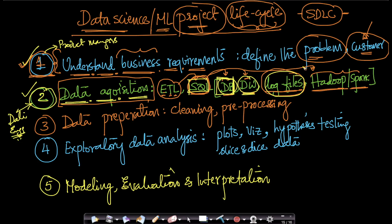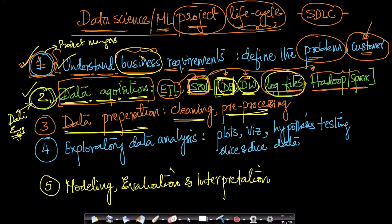The third step is data preparation. Now that you know the business problem and have acquired all the data, you clean and pre-process it and perform featurization. This is where the actual data scientist's work begins. In our course case studies we spend time understanding the business problem and the customer, and we've also seen Python code and SQL used to acquire data before the preparation stage.